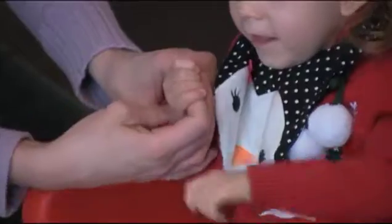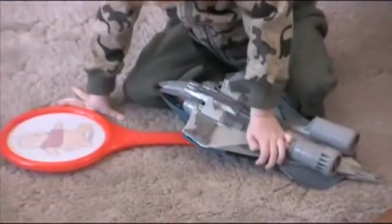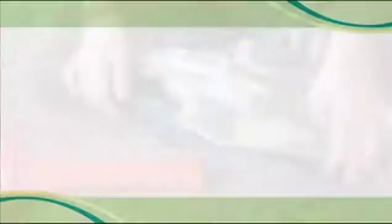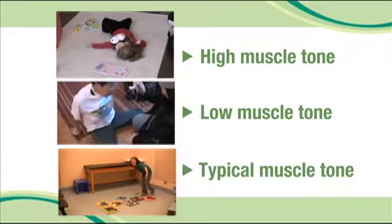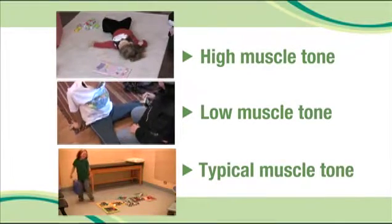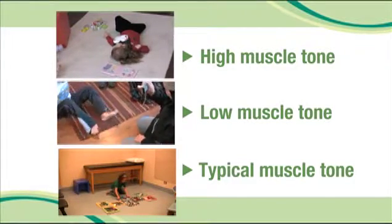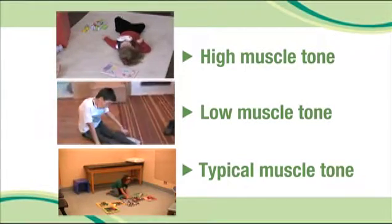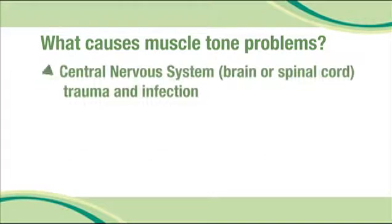If you have too much muscle tone or too little muscle tone, getting your body to do what you want it to becomes much harder. Too much or too little muscle tone occurs when the communication between the central nervous system and the muscles breaks down. There are many reasons why this might happen — the problem might be in the brain, in the muscles themselves, or in the system that transmits the messages back and forth. Central nervous system damage and infection are probably the most common cause of muscle tone problems.